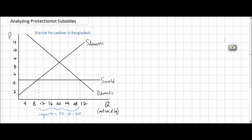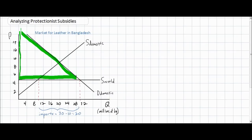With free trade in the market for leather, we can see that the price that Bangladeshi consumers pay for the product is lower than it would be without free trade. In this diagram, the world price of $5 is determined by the world's supply curve, which is greater than the domestic supply curve due to the fact that other countries have a comparative advantage in leather production. Because of this lower world price, Bangladeshi households and consumers enjoy lower leather prices than they would without free trade.